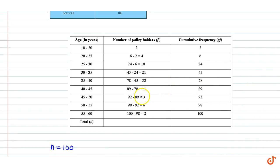Therefore, the median position n/2 equals 50, which lies in the class 35-40. This class has cumulative frequency 78.